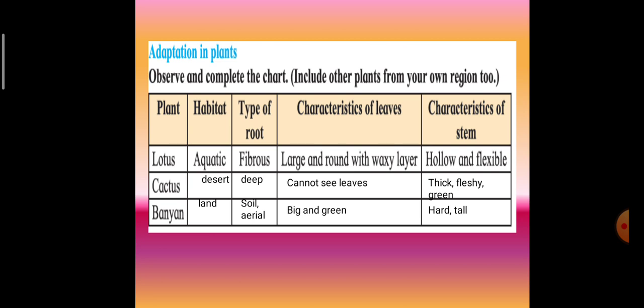Cactus: its habitat is desert. Type of root - it is deeply rooted because it has to search for water. Characteristics of leaves - you cannot actually see leaves on cactus. And if you remember, we had studied, leaves got modified into thorns. And how is the stem? If you remember, it is thick, fleshy and also green. It performs photosynthesis.